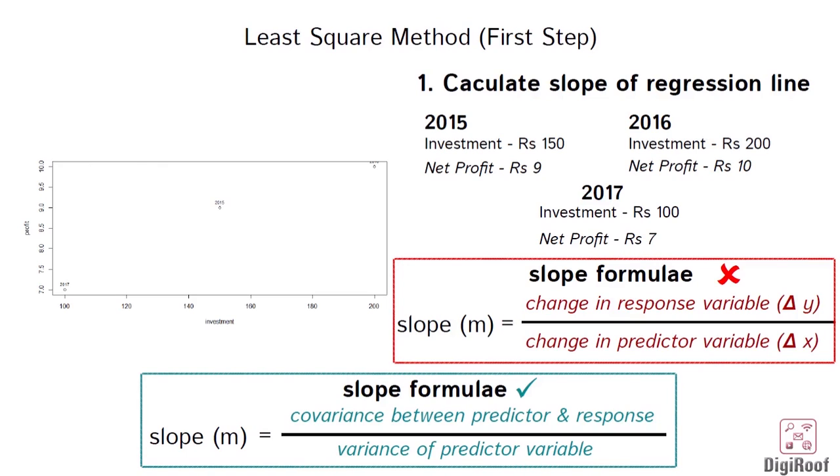So, we cannot use the slope formula that we saw in the previous video which was change in response variable over change in predictor variable. To use that formula, we need to have two corresponding values of response and predictor variable that are on the regression line.